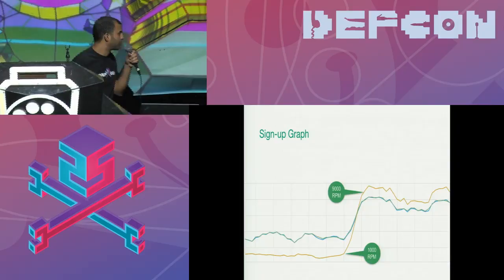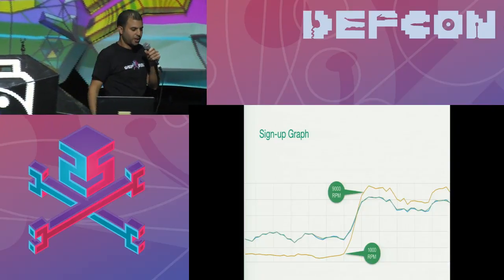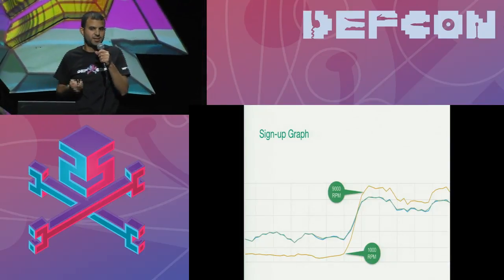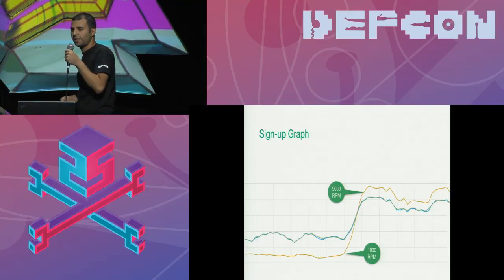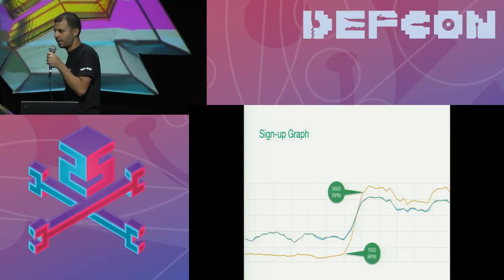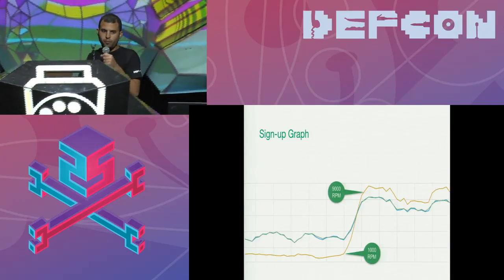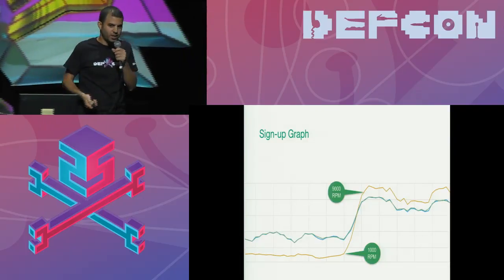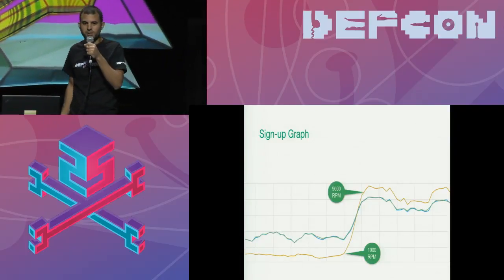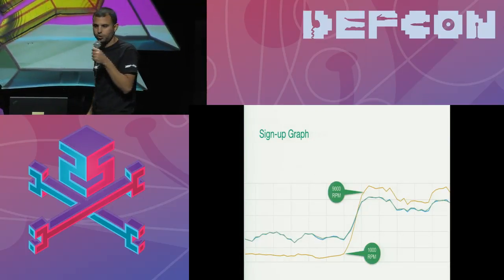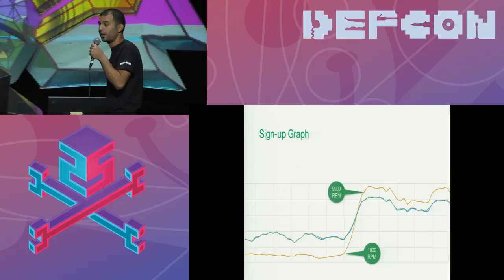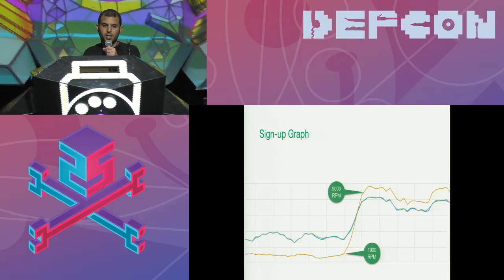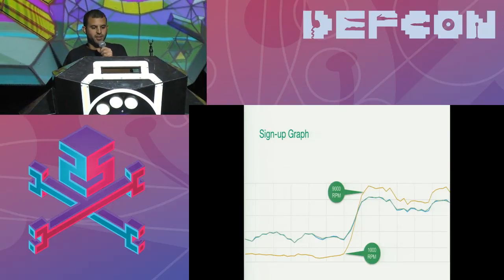suddenly the sign-up graph, which indicates that a lot of new users sign up to Wix, had a dramatic increase. We're familiar with this kind of attack so we checked and we saw that the requests are not originated in one address or one country, but in a lot of sources. This is what we call a bot attack.